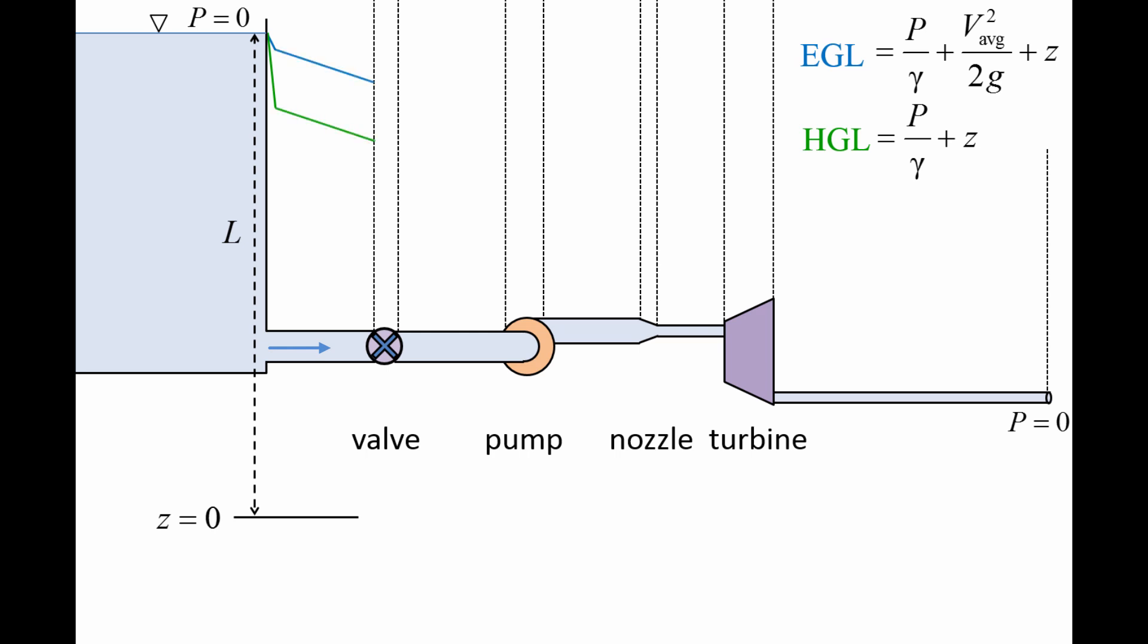In the section of straight pipe, the pressure drops gradually due to friction caused by the pipe wall. Since the flow speed is constant in the pipe, the slope of the EGL and HGL curves decline by the same amount.